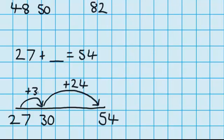You can see I jumped up 3, I jumped up another 24, which means in total I jumped up 27. So I can write that in there.